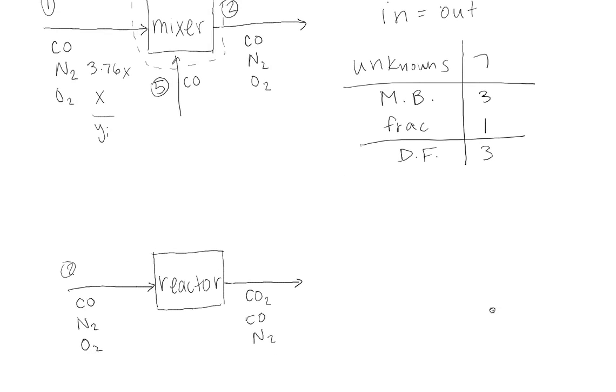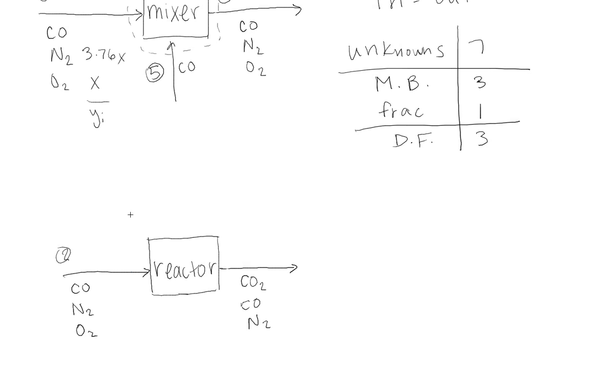So move on to the next system, which is the reactor. So you want to draw your system boundary again around the reactor. And this system is steady state again, open. But now there's a reaction inside of the system boundary. So this changes the degree of freedom slightly because now you have to take into account the extent of reaction.